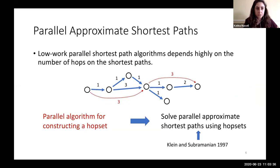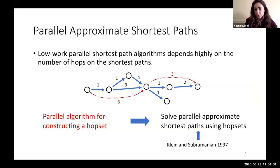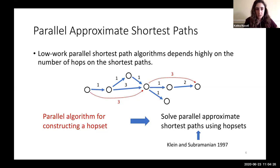The other part of our result is parallel approximate shortest paths. For any low-work parallel shortest path algorithm, the amount of work depends highly on the number of hops on the shortest paths. Through hopsets we're able to construct a graph where the number of hops on the shortest path is limited, so we can use our parallel algorithm for constructing a hopset to then solve parallel approximate shortest paths. Once we have the hopset — this is not new, Klein and Subramanian did this in 1997. In the video we showed a sequential algorithm for constructing a hopset for an unweighted graph, but in the paper we have a parallel algorithm that also handles the directed case.